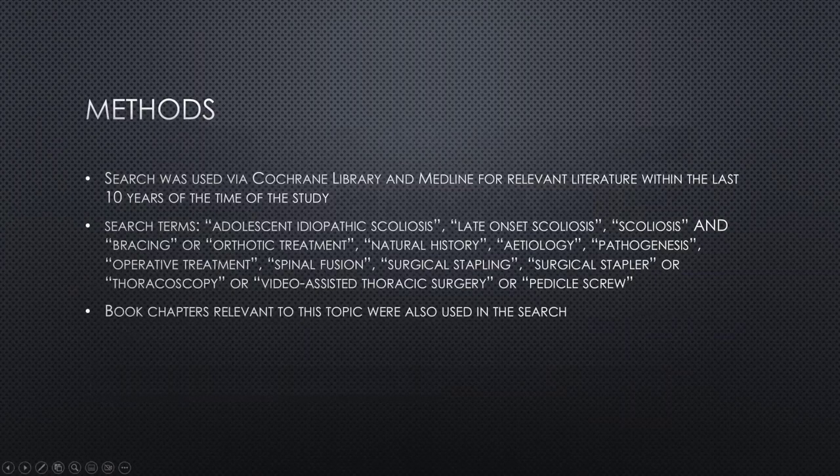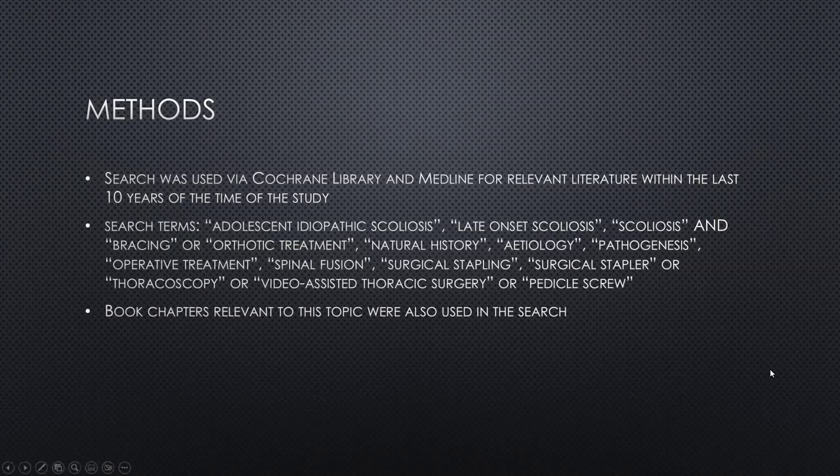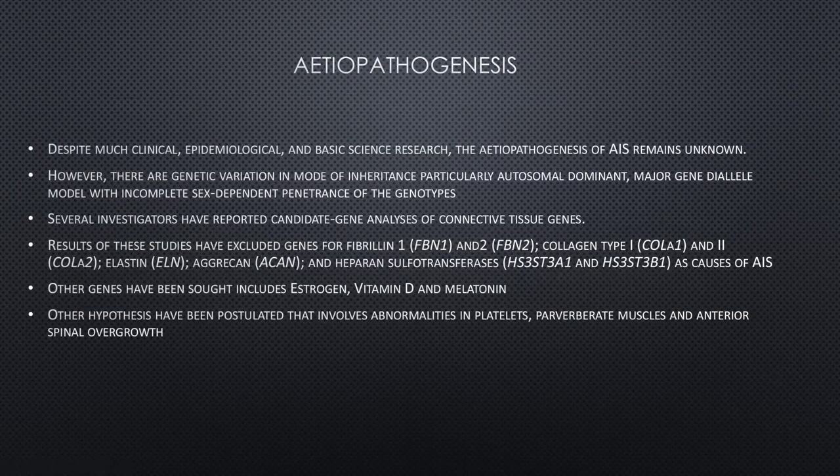The methodology was similar to a systematic review or meta-analysis — they used the Cochrane Library and Medline to search within the previous 10 years. Search terms included AIS, late-onset scoliosis, natural history, pathogenesis, and others associated with the condition. Book chapters were also included.